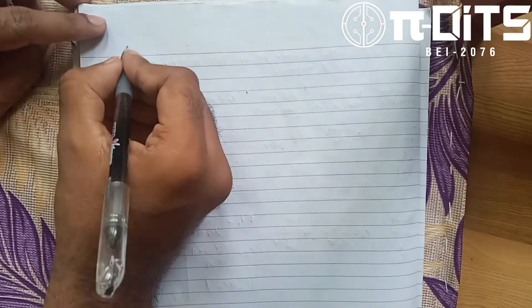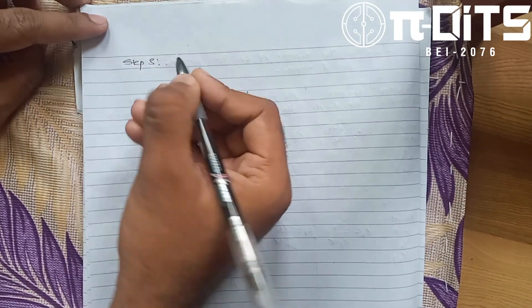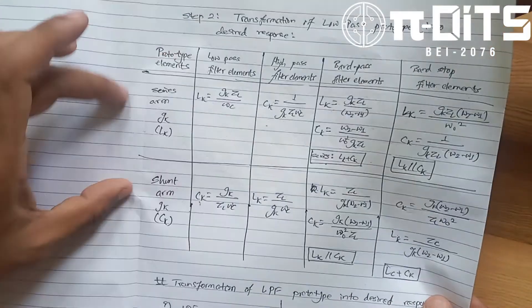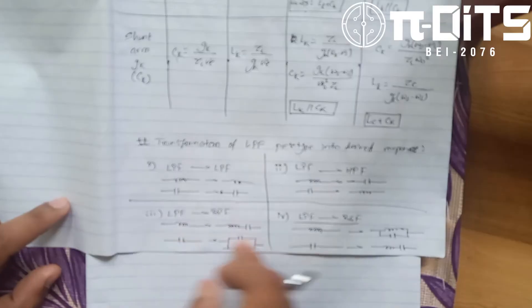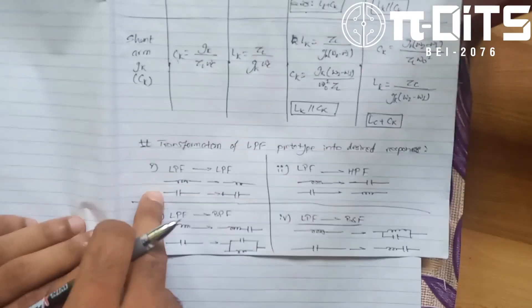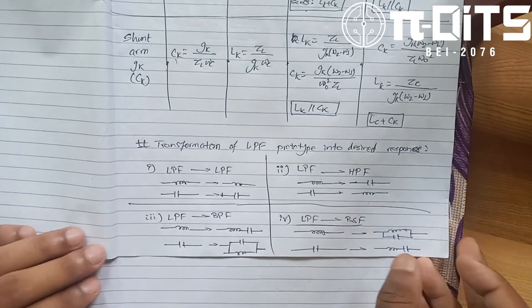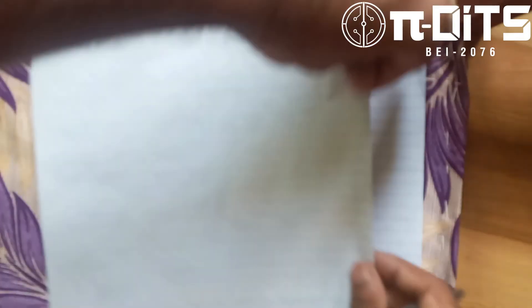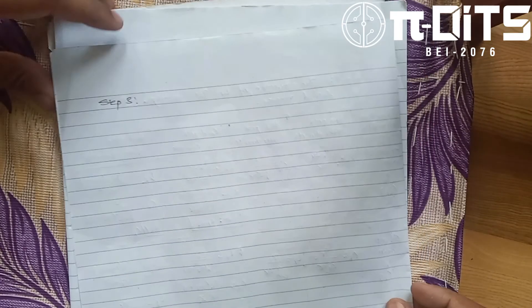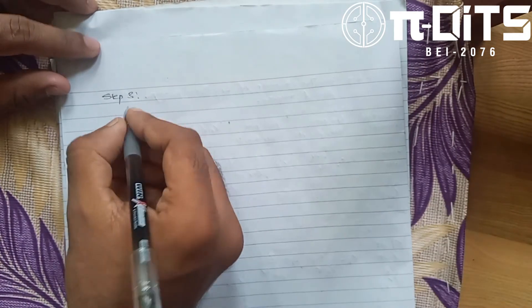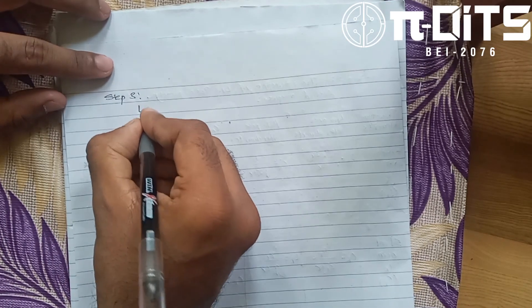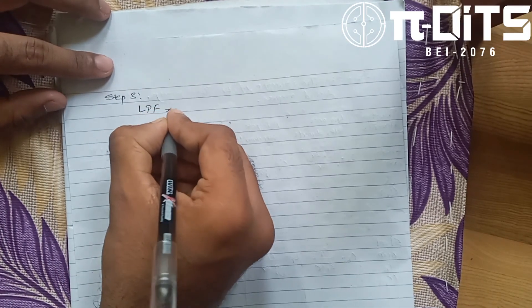Step 3: If you want to use this table, you will be able to use the corresponding figure and element values. Using this table allows you to realize the desired filter elements. For example, the low-pass filter with 5 sections uses 5 capacitance values.